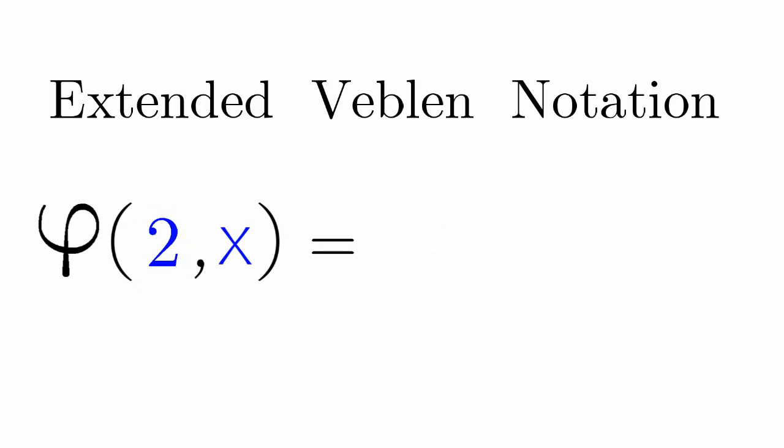Phi 2 of x, that's equal to Zeta sub x. Phi 3 of x, that's equal to Eta sub x. It just goes higher from here.